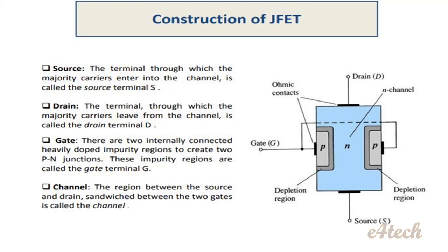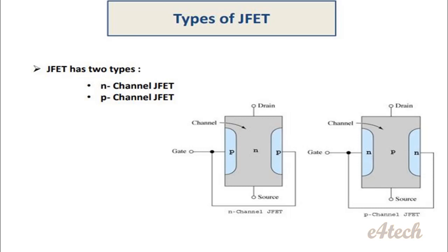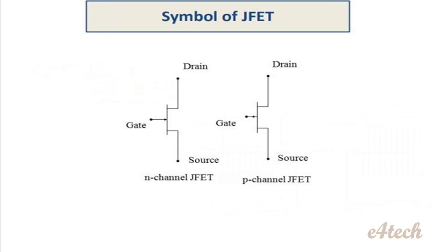J-FET has two types: N-Channel J-FET and P-Channel J-FET. In N-Channel J-FET, electrons are majority carriers. In P-Channel J-FET, holes are the majority carriers — it is the opposite. The channel in N-Channel J-FET is N-type material; in P-Channel J-FET, the channel is P-type material.